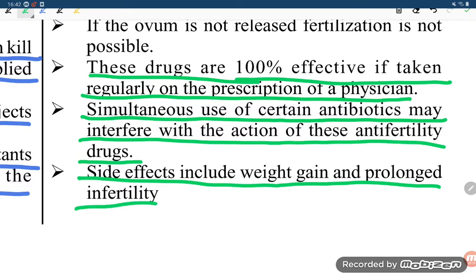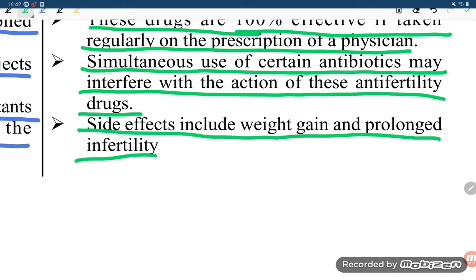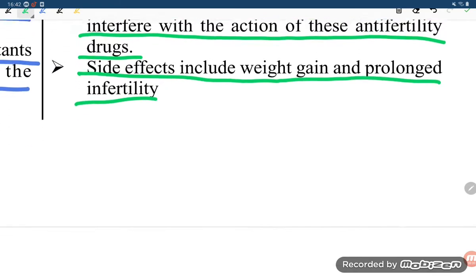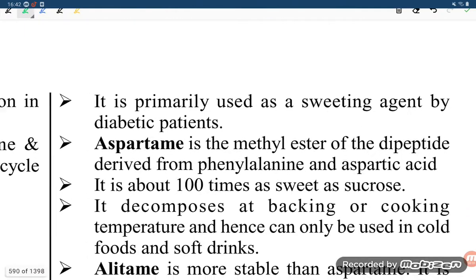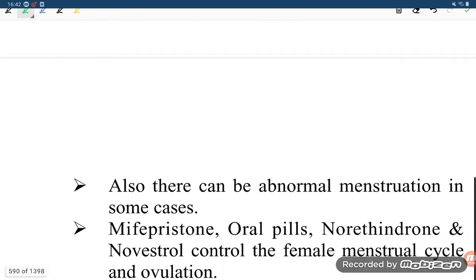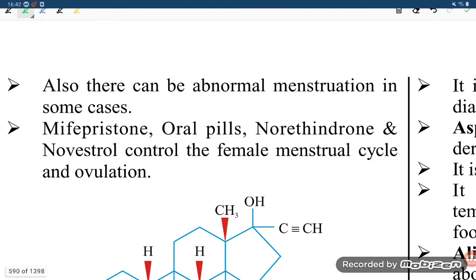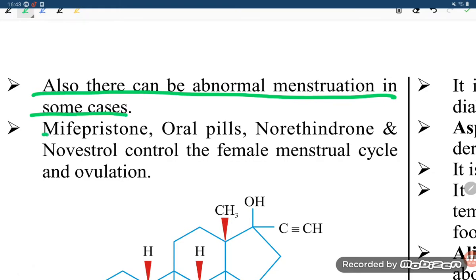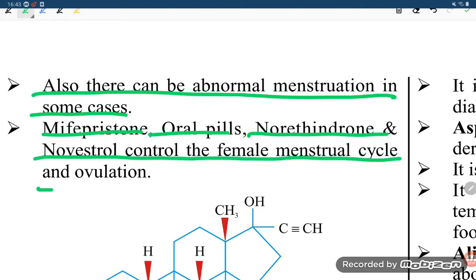Side effects include weight gain and prolonged infertility. In some cases, there can also be abnormal menstrual cycles. Norethindrone and novestrol control the female menstrual cycle and ovulation.